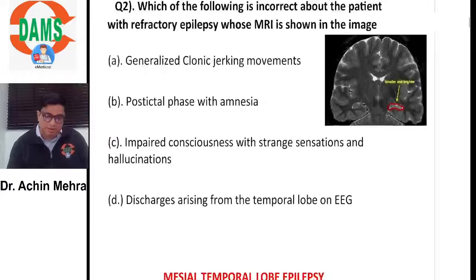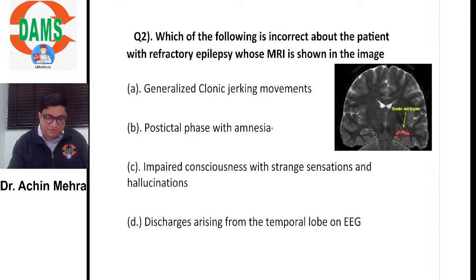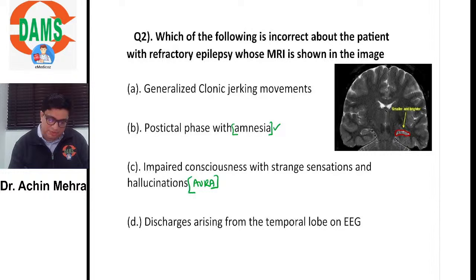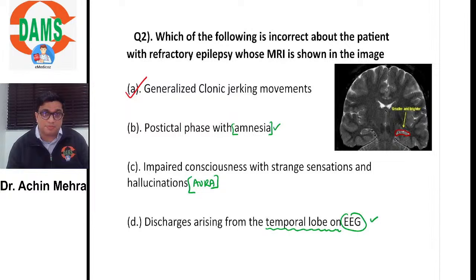Finding the incorrect statement: there is a postictal phase with amnesia — yes, a confusional state follows focal seizure with impaired awareness. Impaired consciousness with strange sensations or hallucinations — yes, that is the olfactory aura. Discharges arise from the temporal lobe on EEG — yes, correct. But do they have generalized tonic-clonic seizure activity? No — temporal lobe epilepsy patients do not have GTCS; they have focal seizure with impaired awareness.